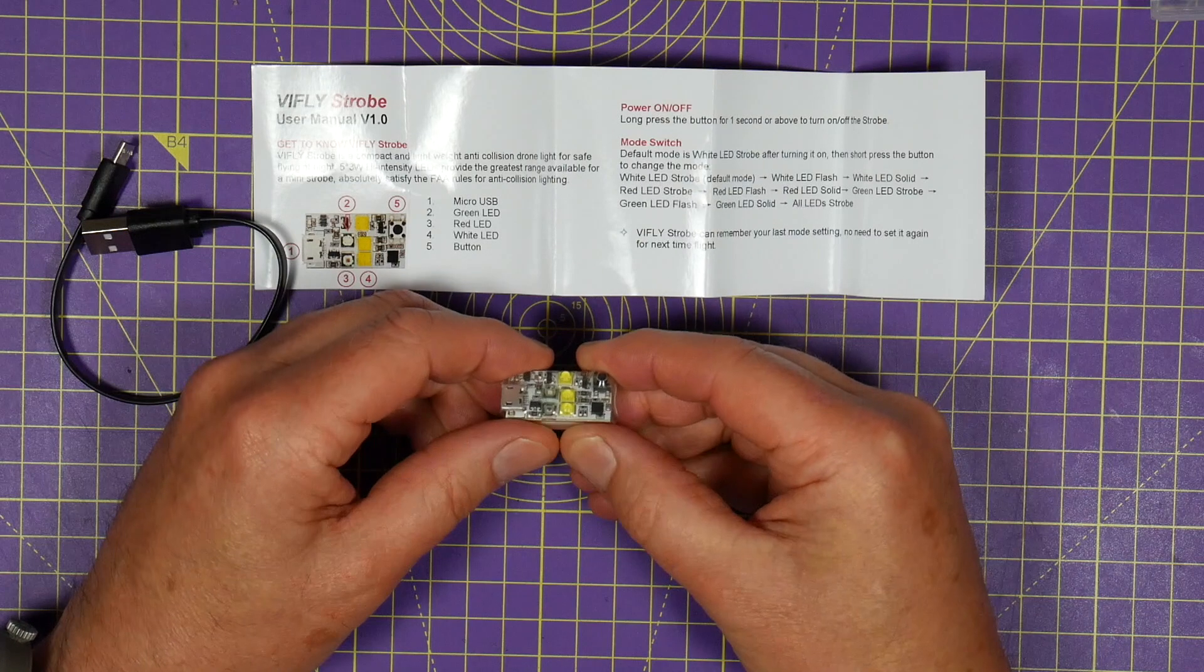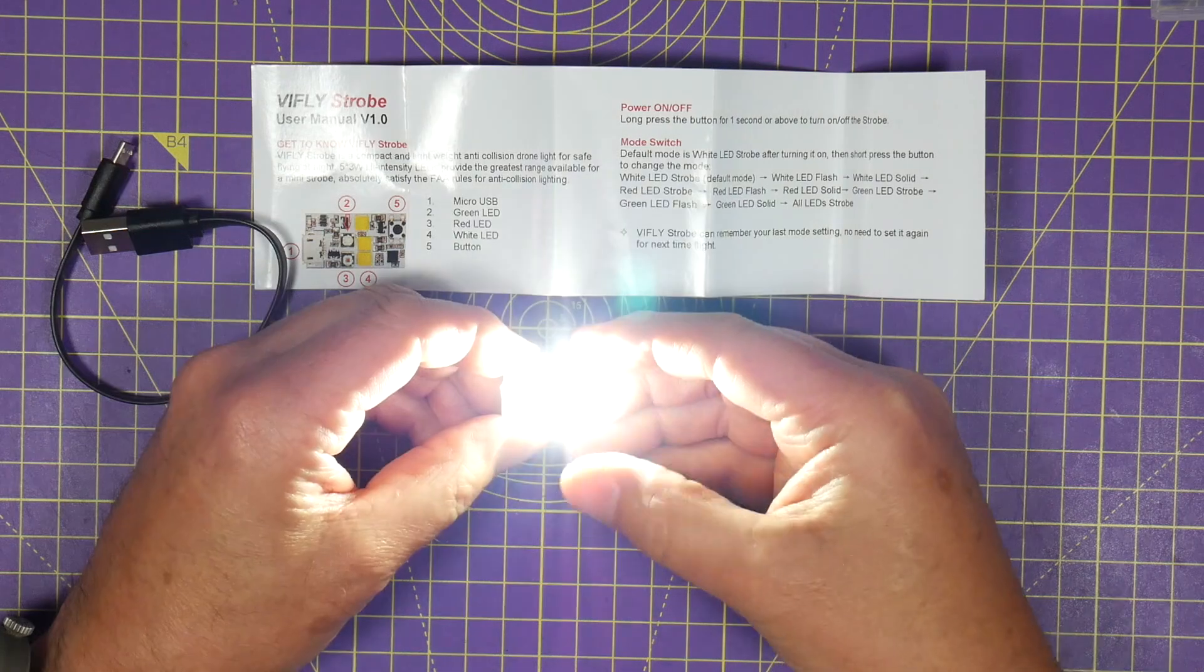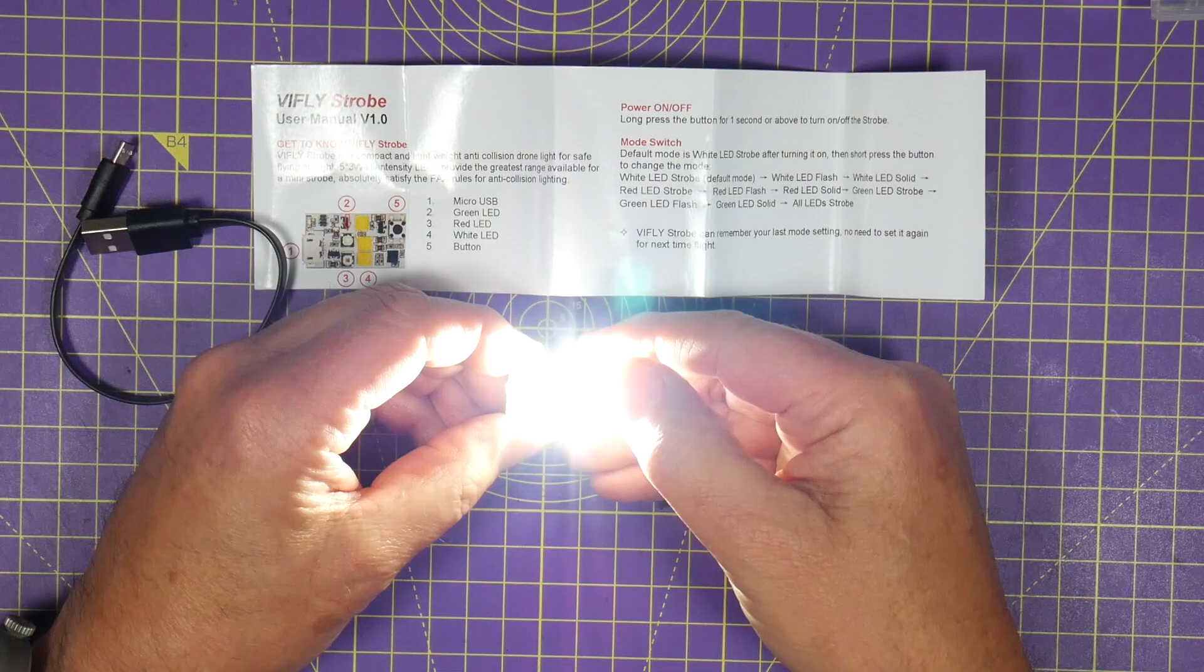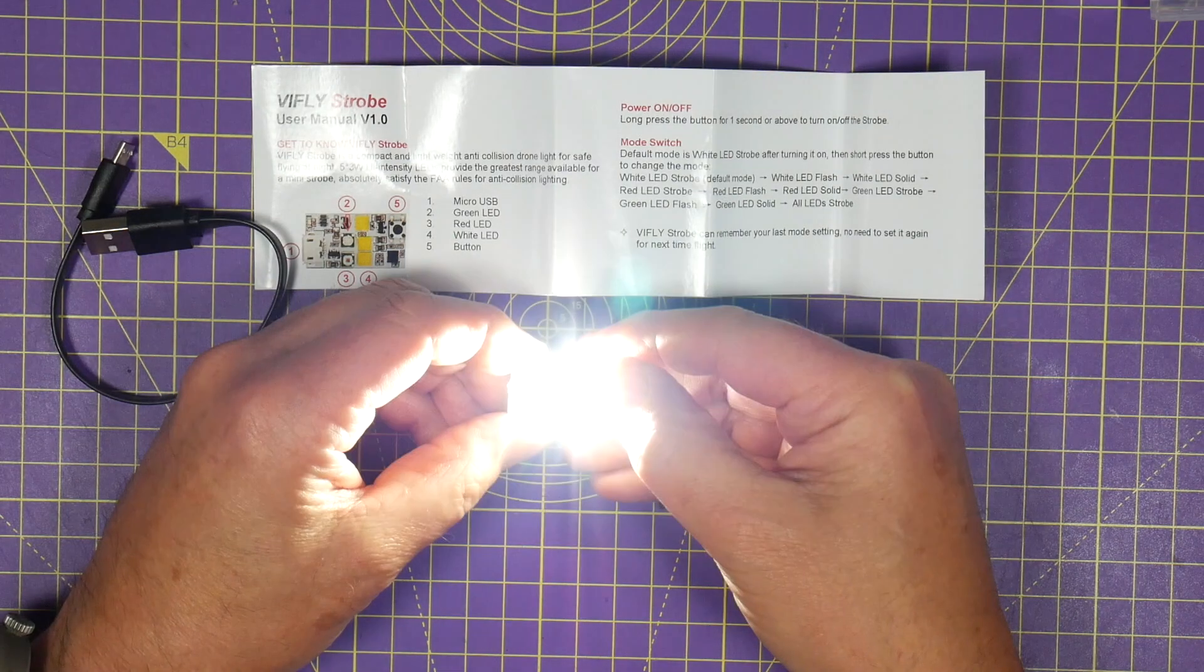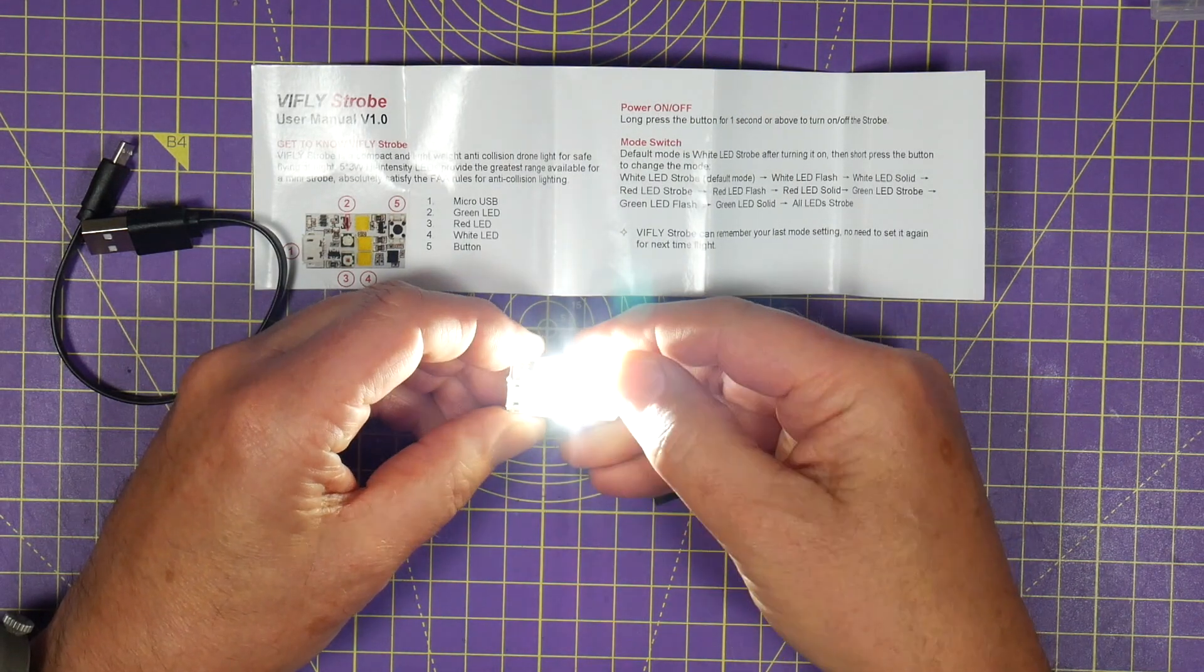Okay so we've got three white, I can't even look at that. If you press the button again it goes to solid white, I'm doing this with my eyes shut. That's flashing slowly, press it again it's solid white.